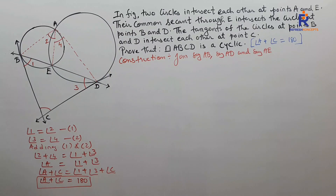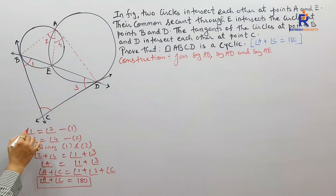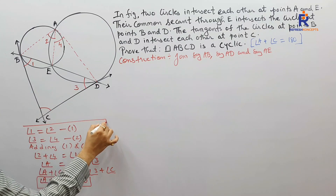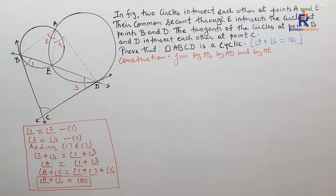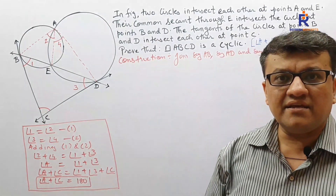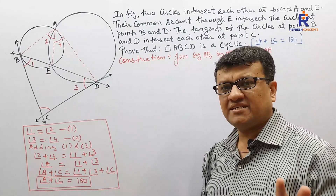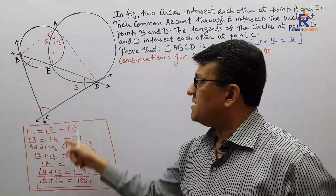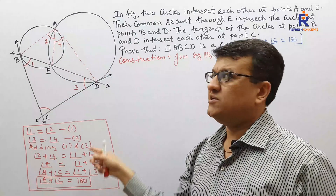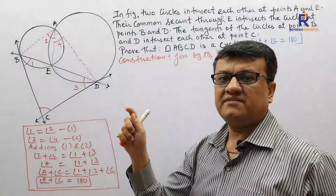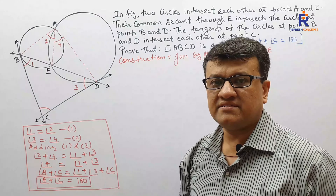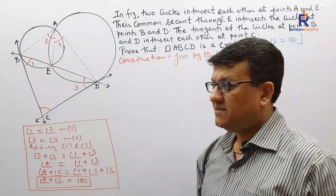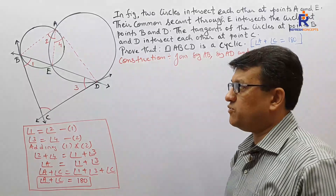Check the blue part, check the red part. This is the skeletal solution — I want my children to understand the skeletal solution. Why? If they understand the skeletal solution they can always write the formal answer. So if A plus C equals 180, I can say the quadrilateral is a cyclic quadrilateral, since if one pair of opposite angles is supplementary, the quadrilateral is a cyclic quadrilateral.